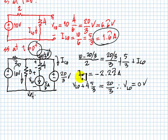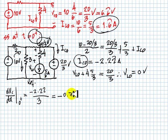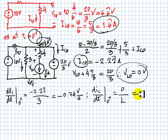We obtain the derivative of the voltage in the capacitor with respect to time at zero plus as being Ic0 divided by C, giving dVc/dt at zero plus as negative 0.74 volts per second. From the voltage in the inductor, we obtain the derivative of the current in the inductor with respect to time at zero plus as VL0 divided by L, which is 0 amps per second.